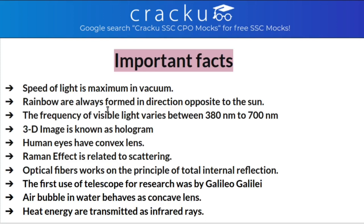When rainfall and sun are together, the sunlight scatters and forms a rainbow of VIBGYOR colours, formed opposite to the sun. The frequency of visible light varies between 380 nm to 700 nm. A 3D image is known as a hologram. Human eyes have convex lenses.